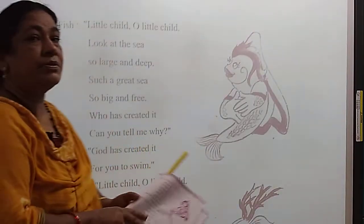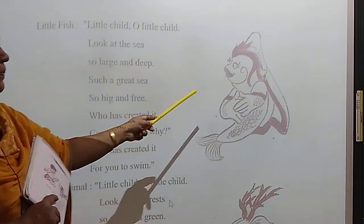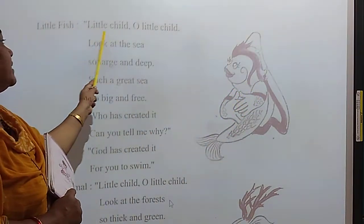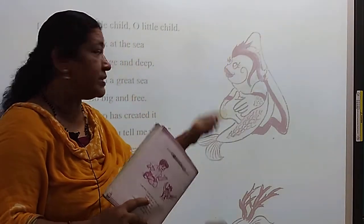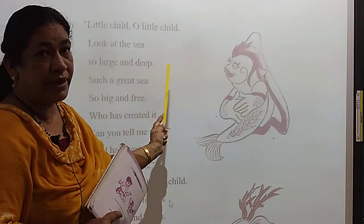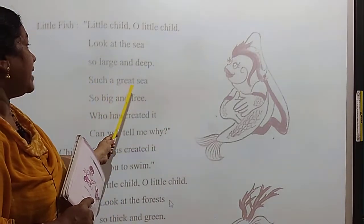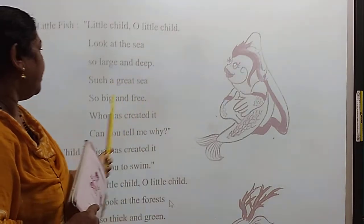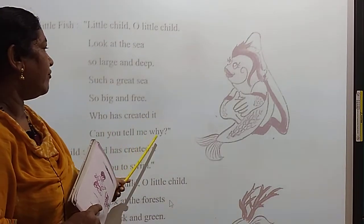Next, little fish. See the picture. Little child, look at the sea. Look at the sea, so large, L-A-R-G-E, large and deep. Such a great sea, G-R-E-A-T great, so big and free. Who has created it? Can you tell me why?